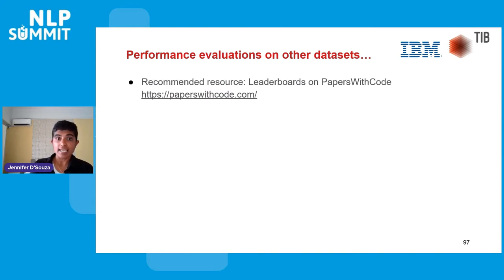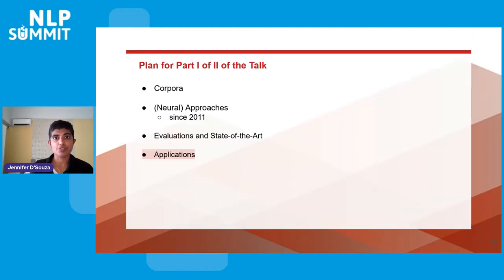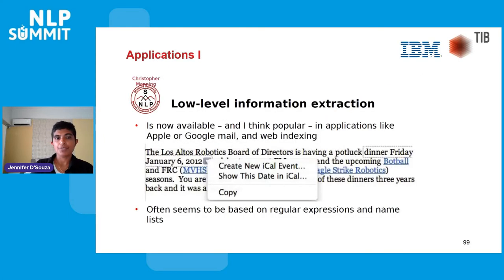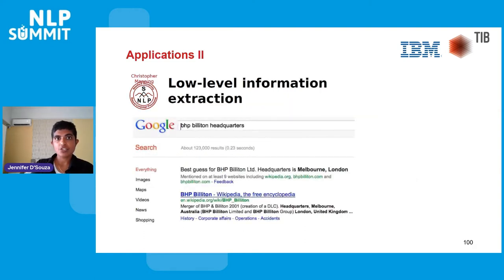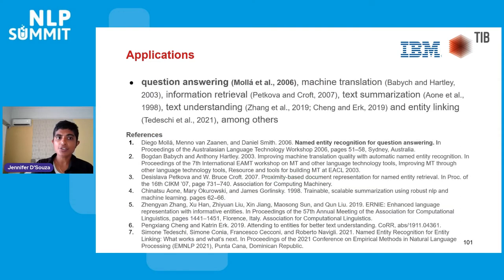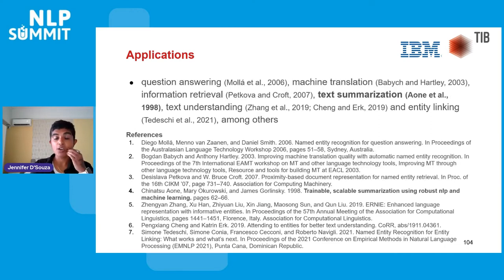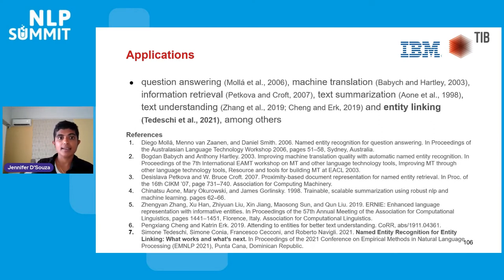For evaluations on other datasets, a recommended resource is paperswithcode.com, where you can see various evaluations over time. Applications of NER include low-level information extraction tasks such as extracting event cards from emails, search engines — which heavily rely on NER — and high-level NLP applications such as question answering, machine translation, information retrieval, text summarization, text understanding, and entity linking. NER forms the basic component of various high-level NLP applications.